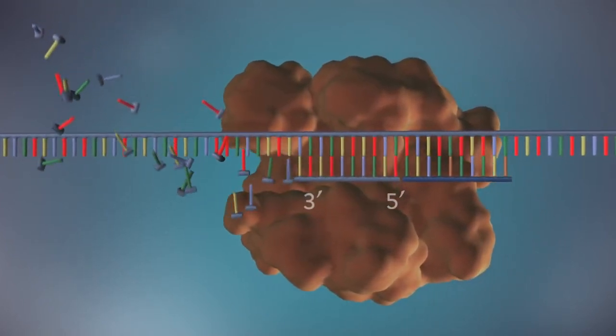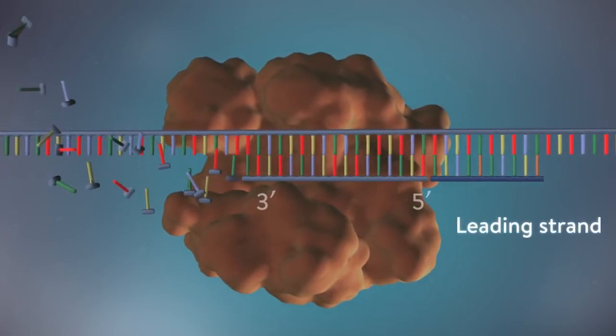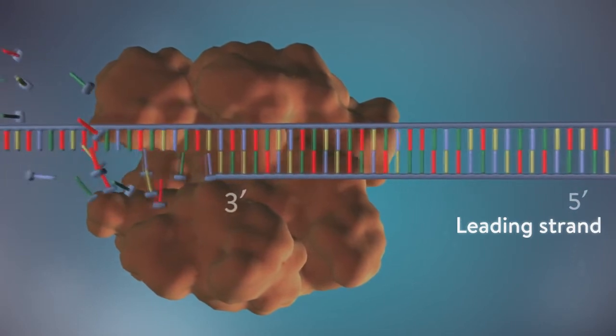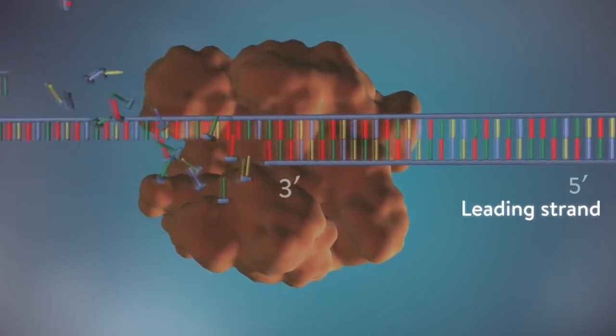One of the new strands of DNA, the leading strand, is made continuously, the DNA polymerase adding bases one by one in the five prime to three prime direction.